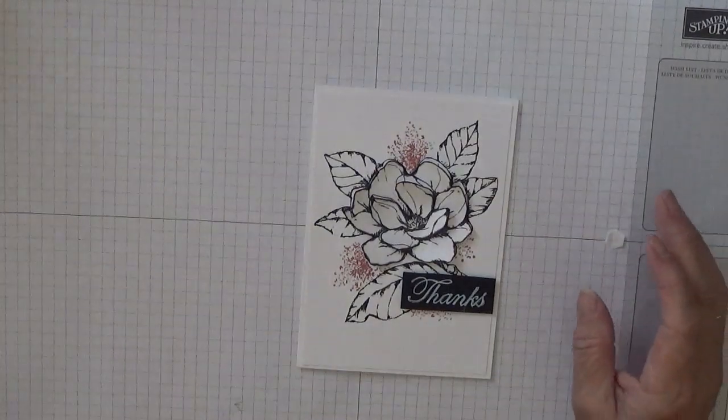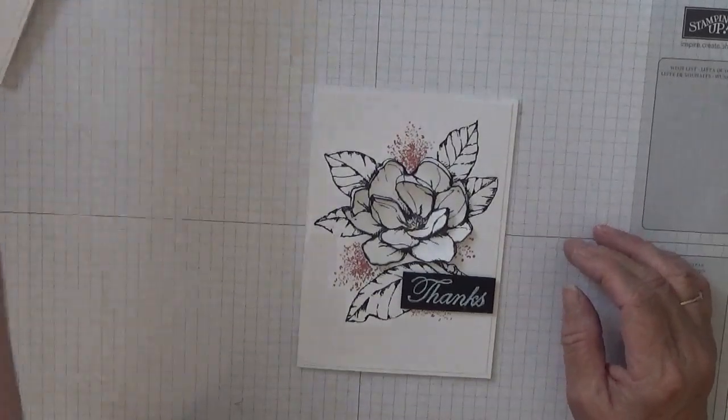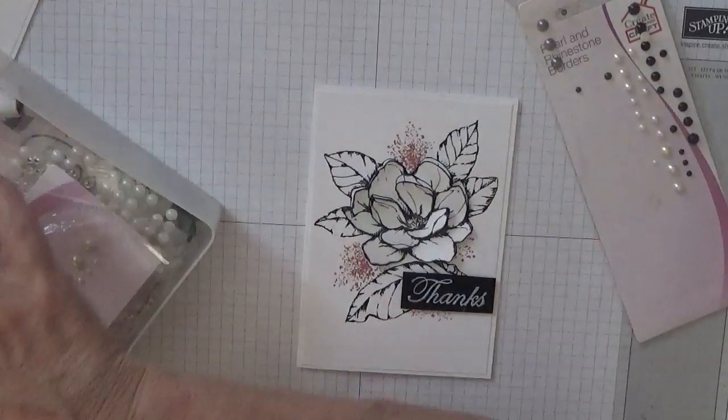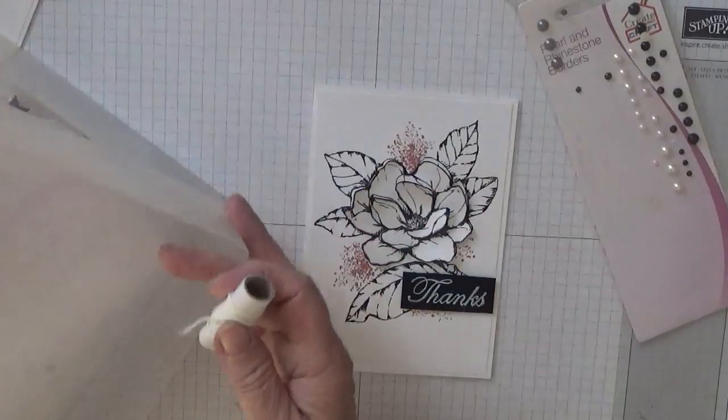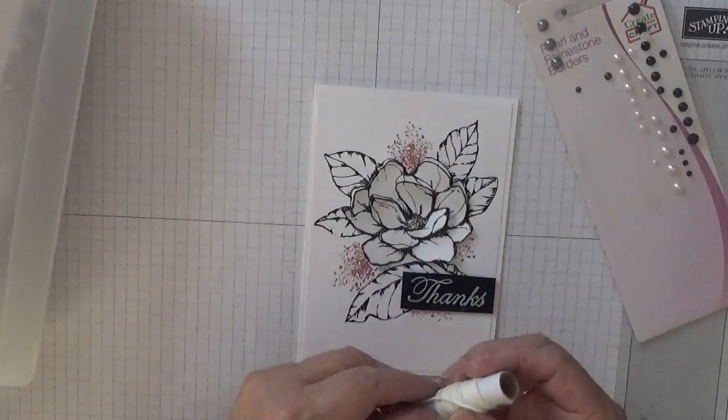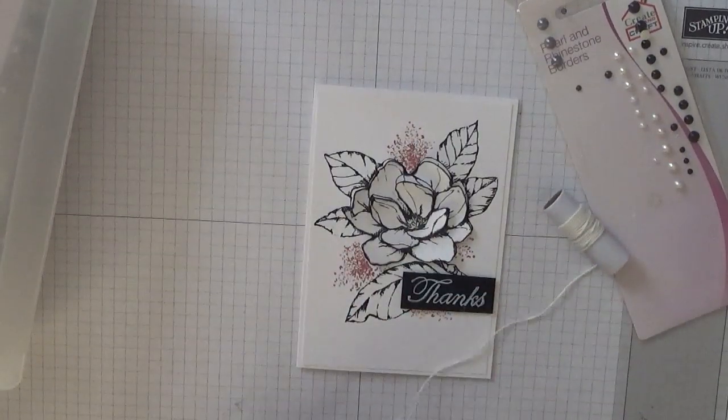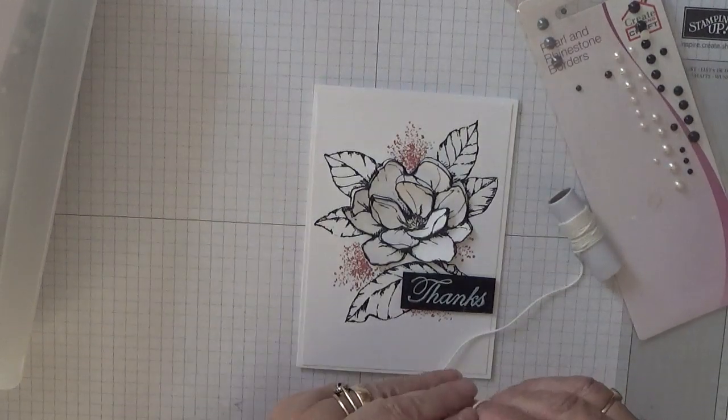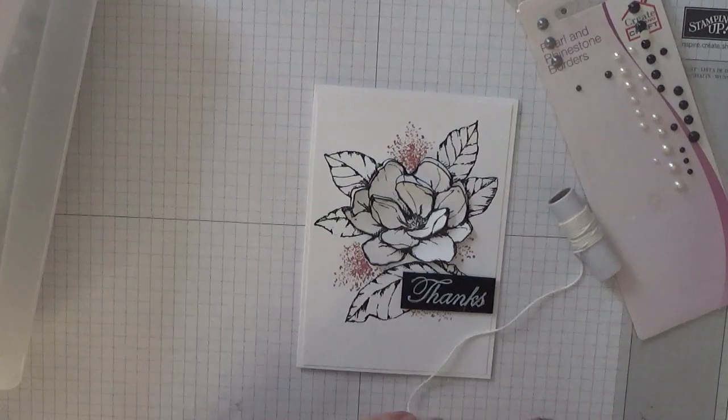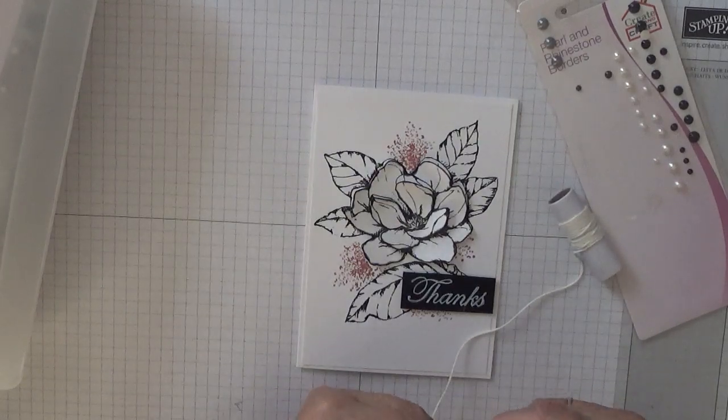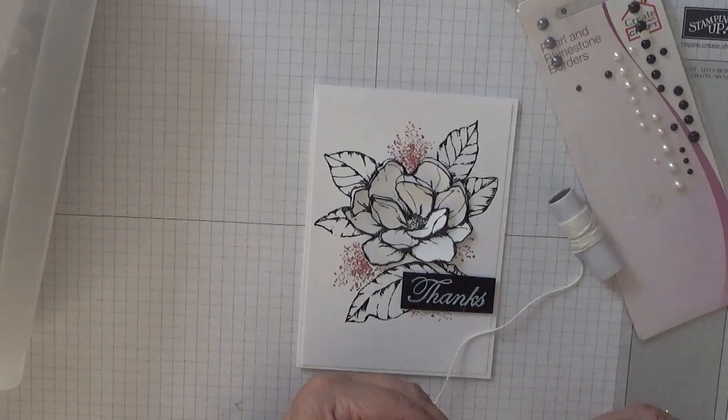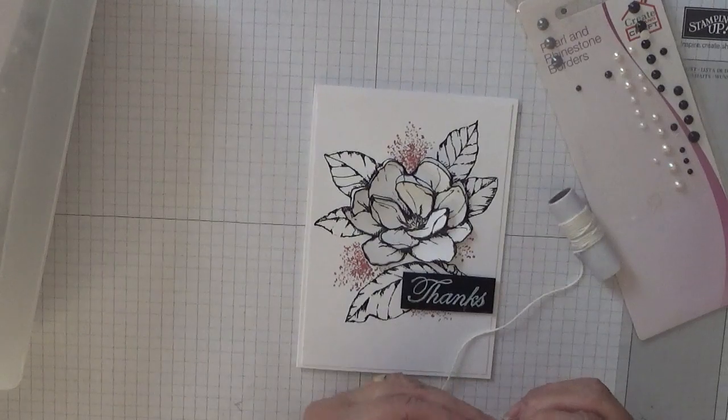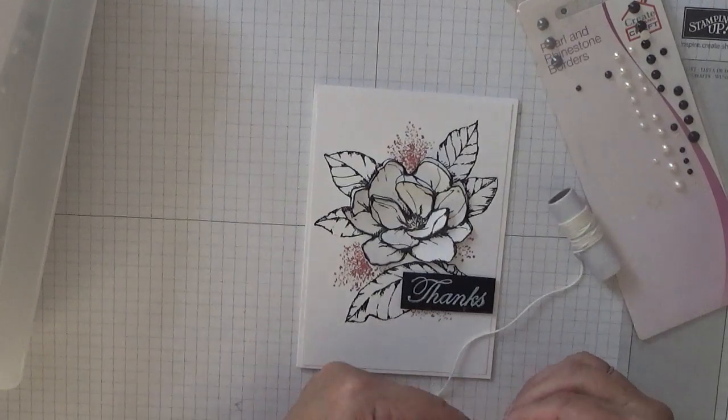Now in my gems I have some black and white gems, but I also have some Very Vanilla Baker's twine, which I'm going to tie in a bow. I only want a little bow, I don't want a big one. That would do nice.